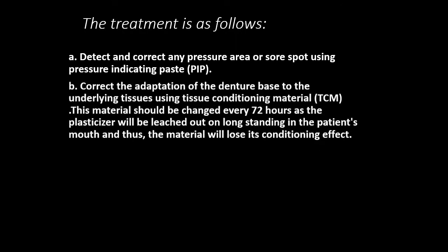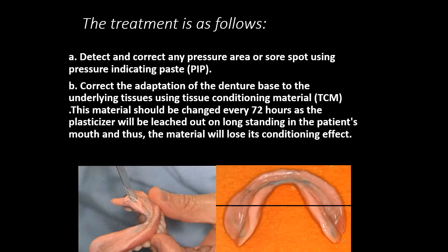The treatment program for abused tissue: first, detect and correct any pressure area by means of pressure-indicating paste, and correct the adaptation of the denture to the underlying tissue by using tissue conditioner material. This material should be changed every 72 hours because the plasticizers will leach from it, causing it to harden and lose its conditioning effect.